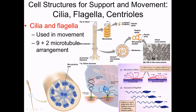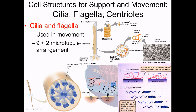Cilia are found in your airway. When you breathe in dust, pollen, particles, or tobacco smoke, the short cilia at the surface of your airway grab hold and move particles along. Cilia don't move the whole cell — they move things across the surface. It works like crowd surfing: the cilia grab and push something forward, come back down, go under, and push something else along, constantly propelling particles up toward your nose or throat so you can get rid of them.